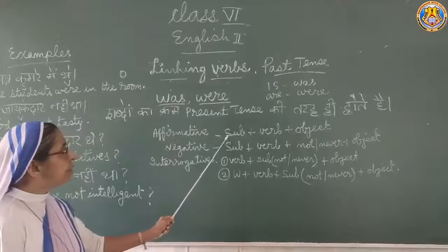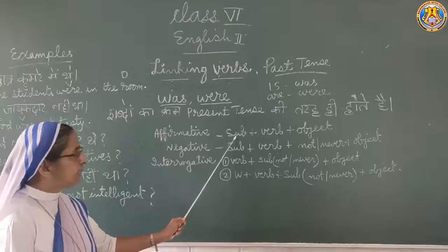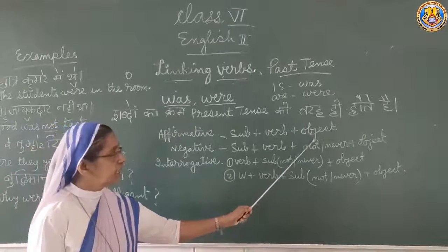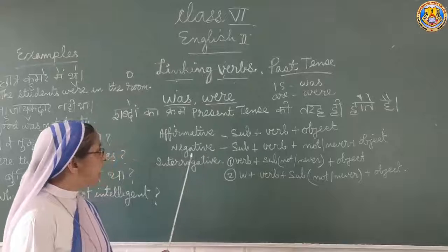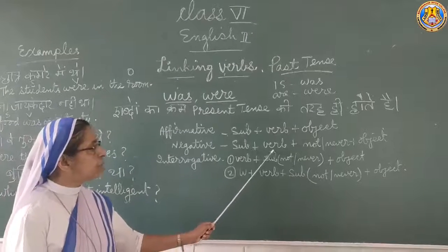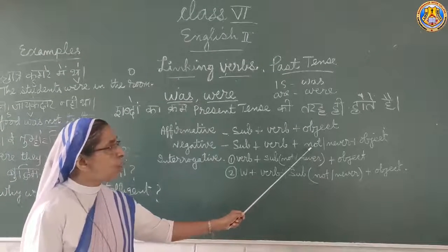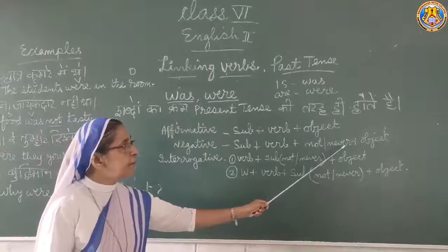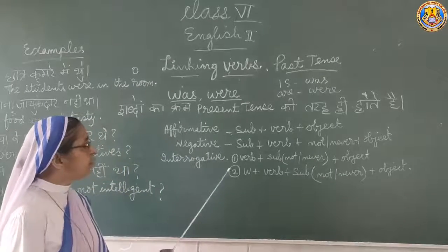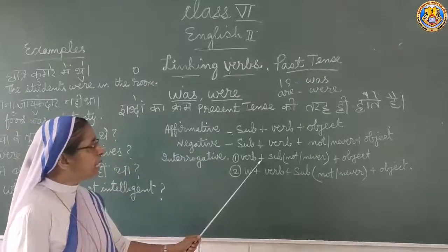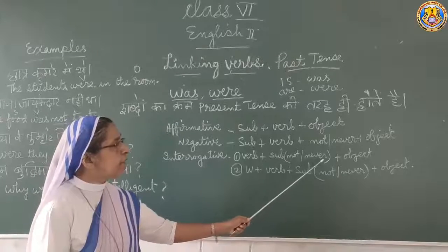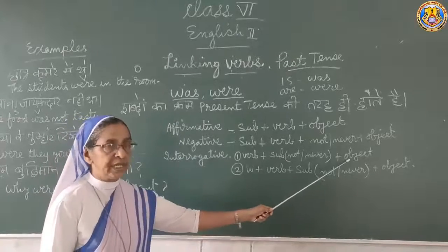For the affirmative sentence: Subject plus Verb plus Object. For the negative sentence: Subject plus Verb plus Not or Never plus Object. For the interrogative sentence: Verb plus Subject plus Not or Never plus Object.